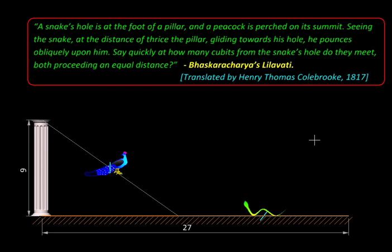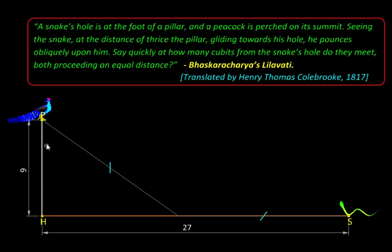So let's see how to solve this problem. The first step in this solution is abstraction. We are going to replace these physical entities and creatures by their geometric representation. We'll get rid of the column and just represent it with a line. We'll get rid of the peacock and replace it with just this point P, its initial position. Same with the snake, point S represents the snake's initial position. And point H here is the snake's hole.